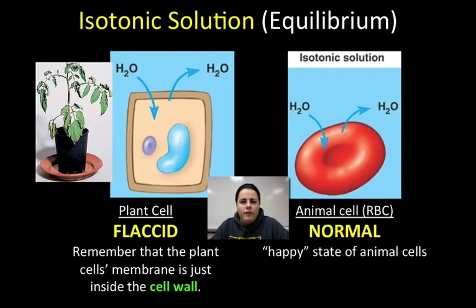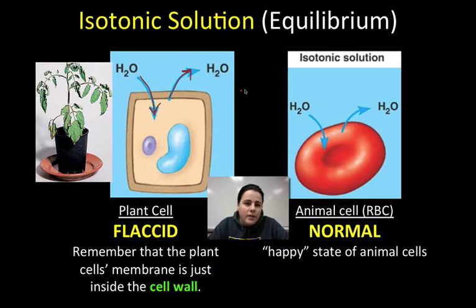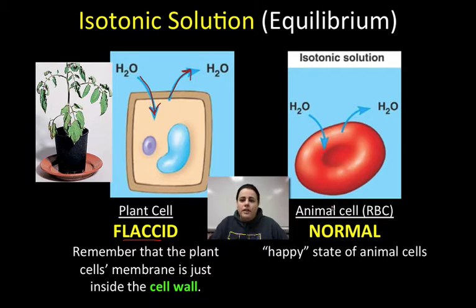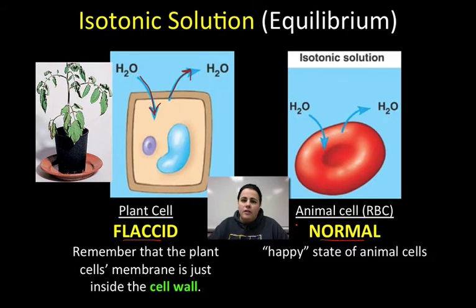In an isotonic solution, plant cells will have water enter and exit at approximately equal rates. But the fact that water is leaving the cell is not great for plants — it makes them flaccid, just a little wilted. Plants need water and need to hold on to it. Animal cells, on the other hand, like the red blood cell, love to be in an isotonic solution. This equilibrium — the equal inflow and outflow of water — creates a normal cell maintaining homeostasis, that happy internal state where they function best. Animal cells love isotonic solutions; plant cells, not so much.